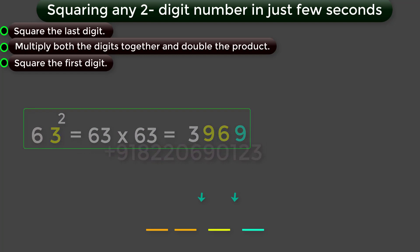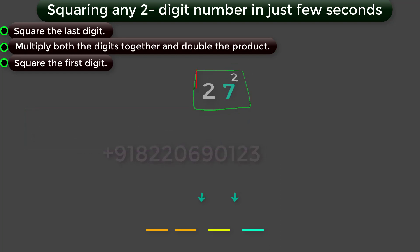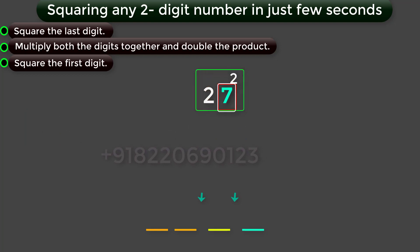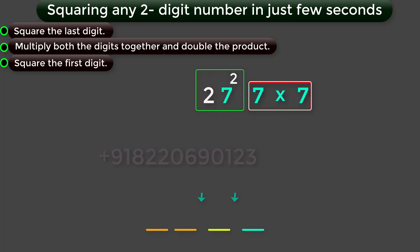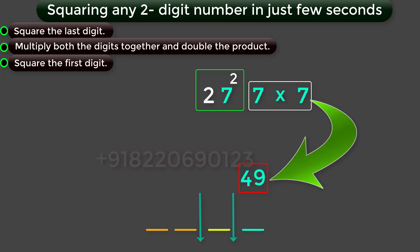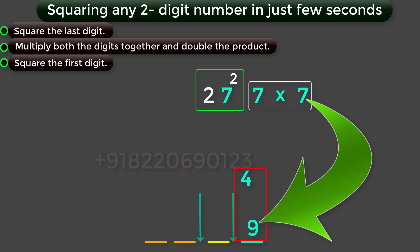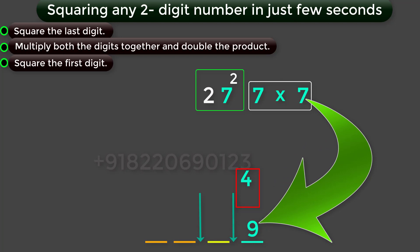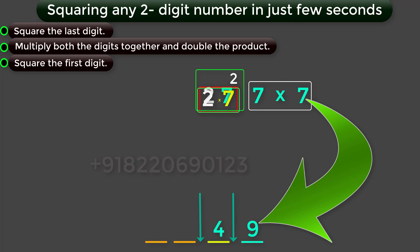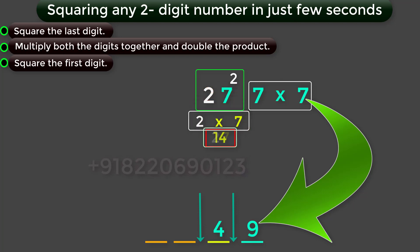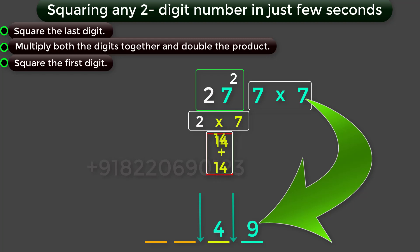Let us take another example: 27 squared. Find the square for the last digit 7, you will get 49. In this 49, the 9 becomes the last part of the answer, and the 4 moves to the middle part of the answer. Next, multiply both digits 2 and 7 together, you will get 14. Then, double this 14, you will get 28.